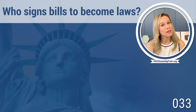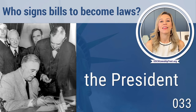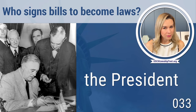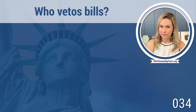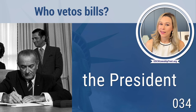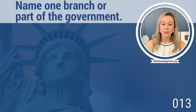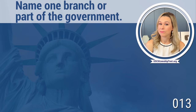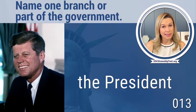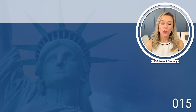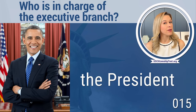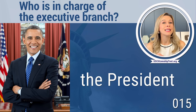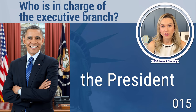Who signs bills to become law? The president — I always picture the president signing bills on his desk. Who vetoes bills? Again, the president — so either signing bills or vetoing bills. Name one branch or part of the government. The president — that's the easiest to remember. Who is in charge of the executive branch? The president. Executive — you can think of the CEO, chief executive officer of a company, as like the president.